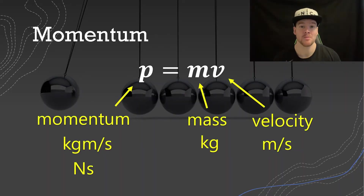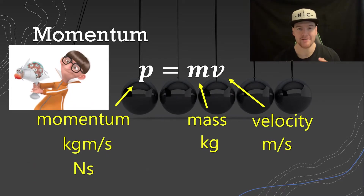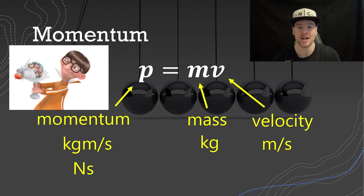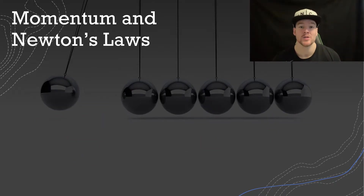It's important to note that momentum is a vector — we do have to consider direction when dealing with momentum. Momentum in one direction is very different than another direction, especially when we're looking at collisions, as we'll see coming up.